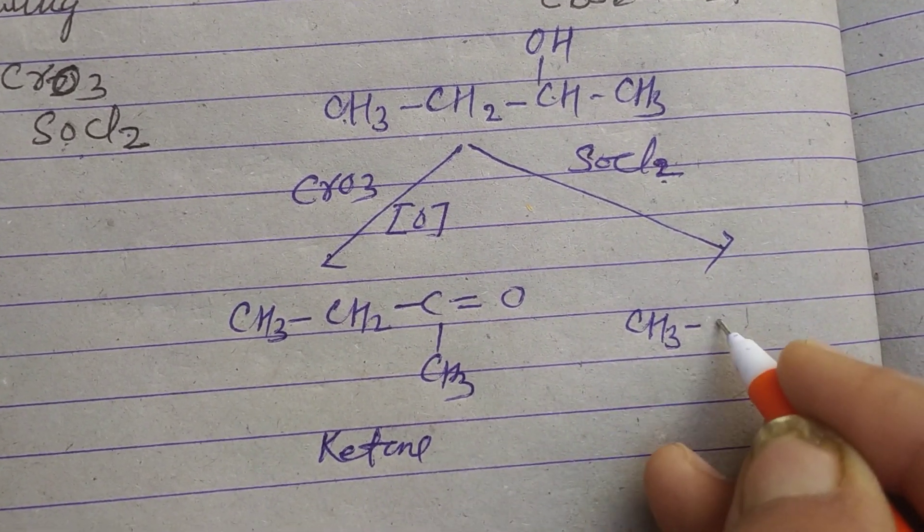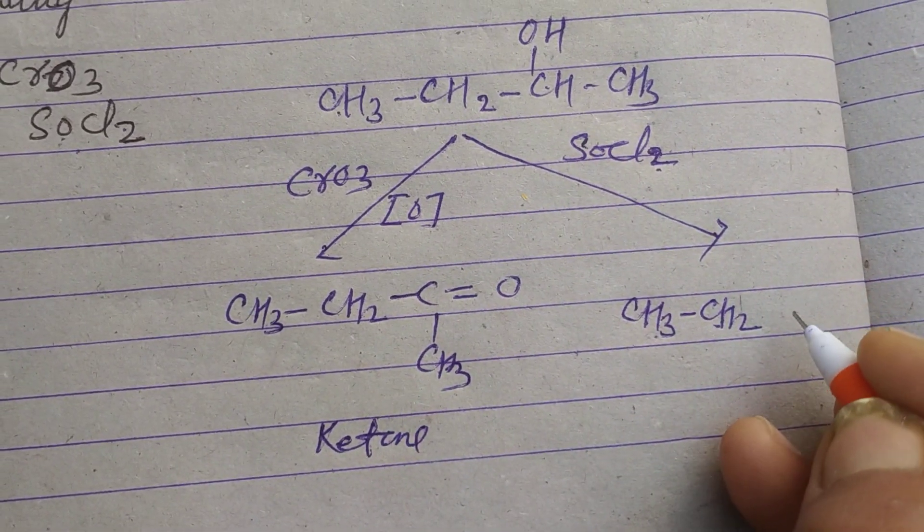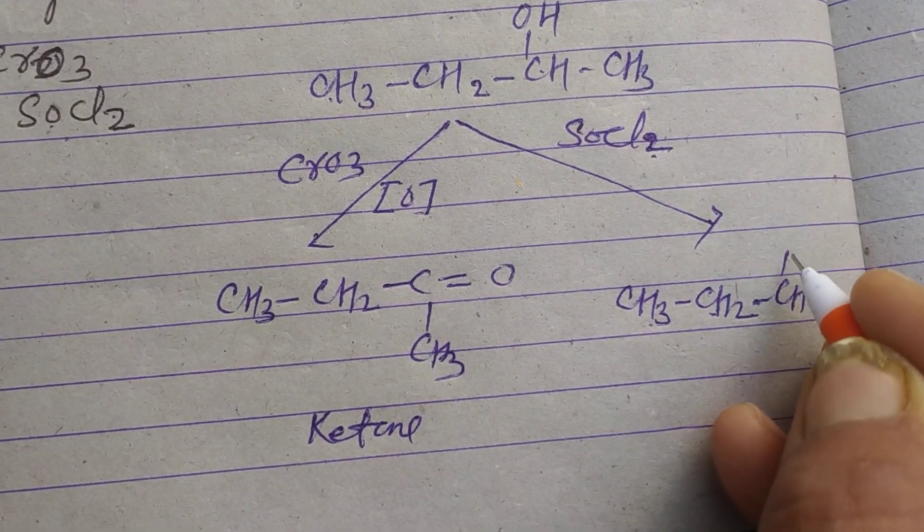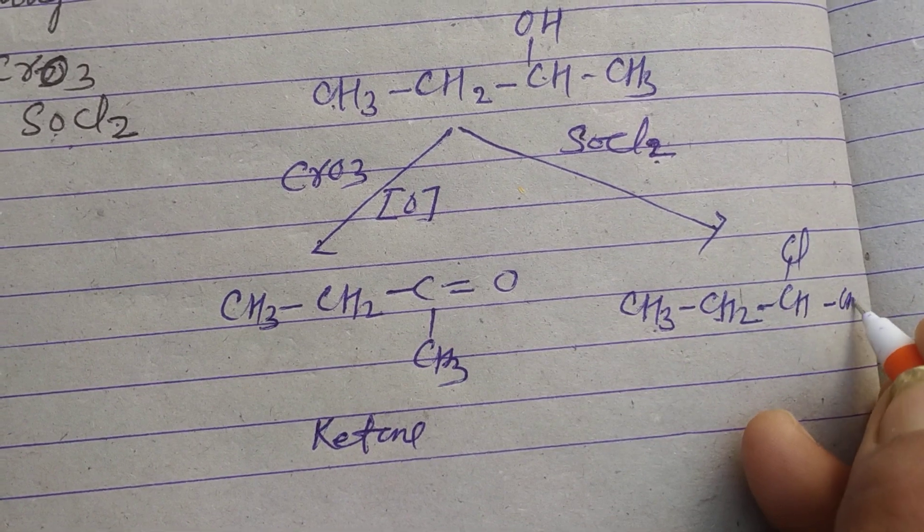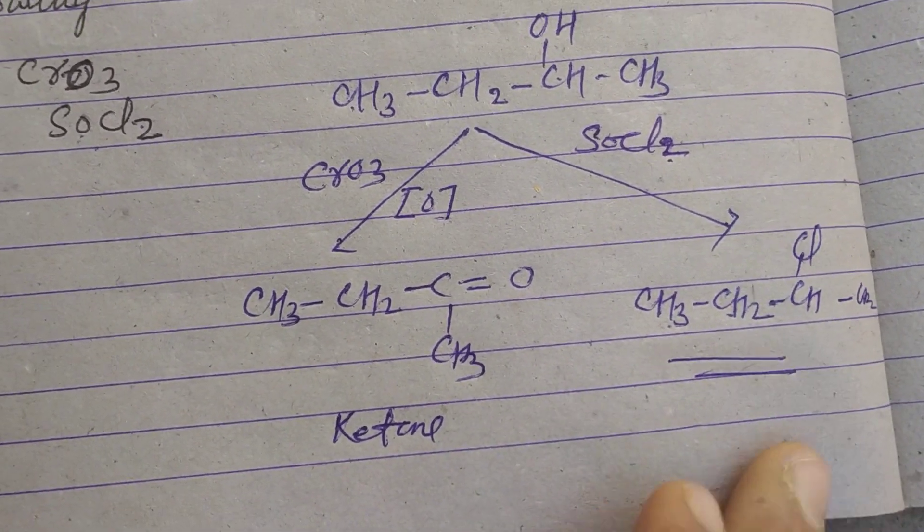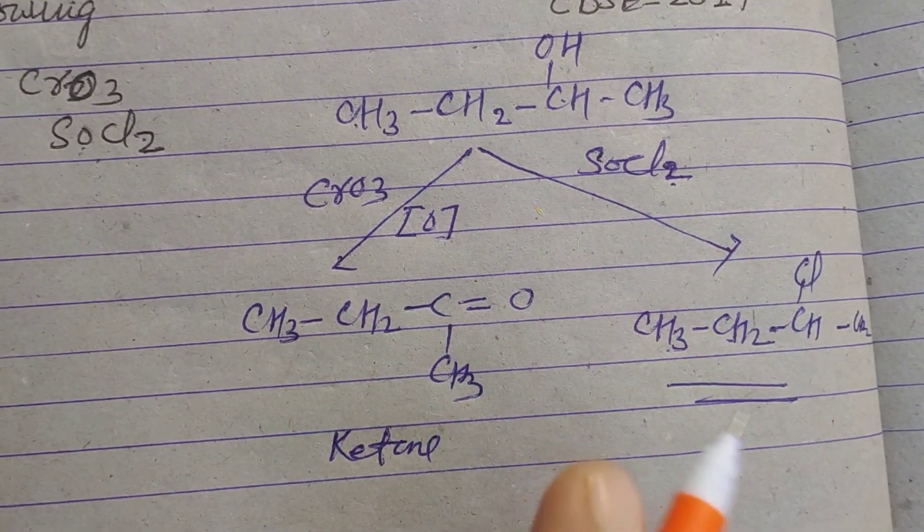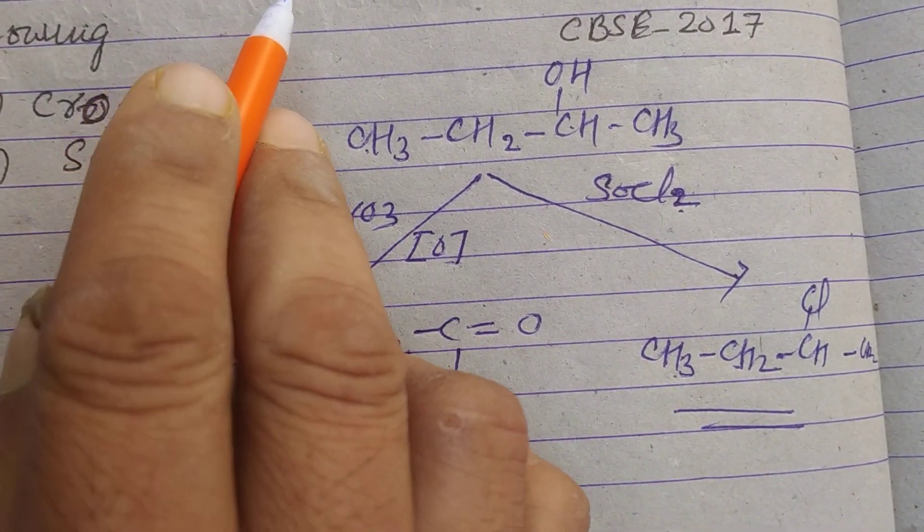CH3-CH2-CH-CH3, and this is Cl on carbon 2. So this compound is formed after reaction of SOCl2 with butan-2-ol.